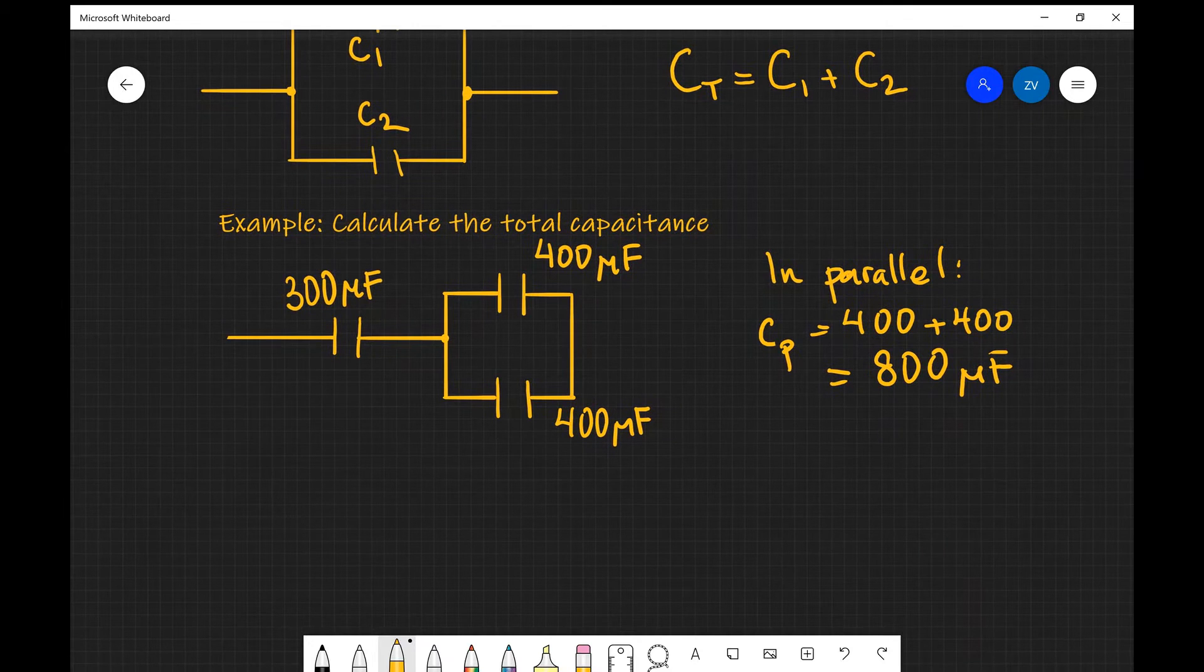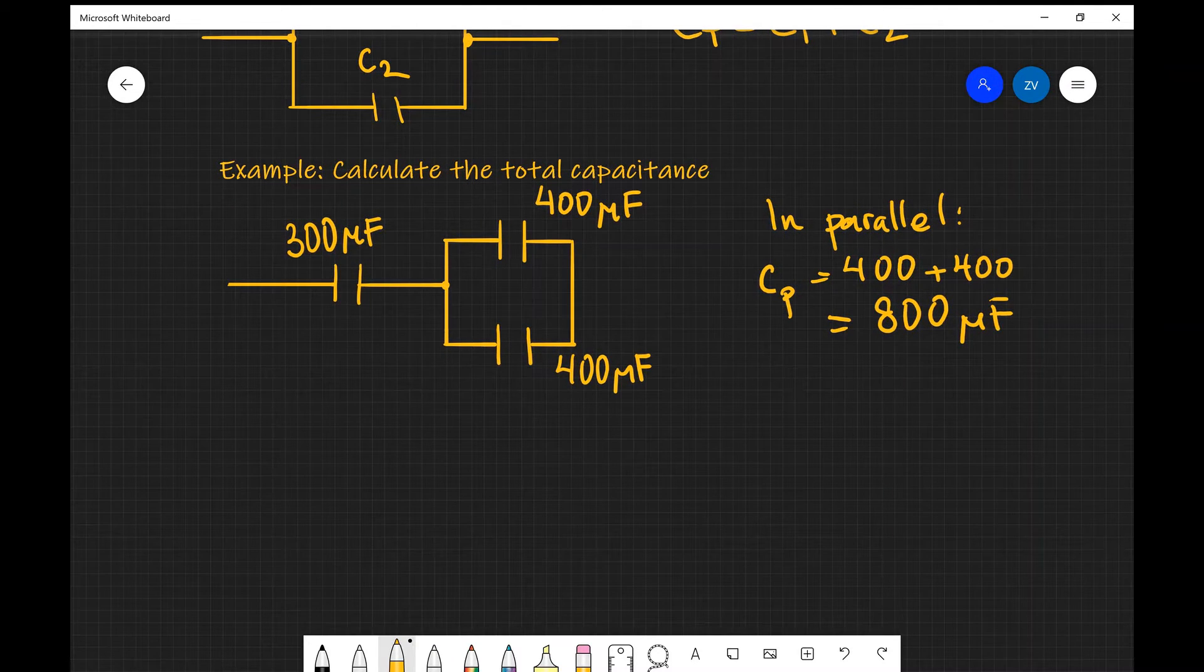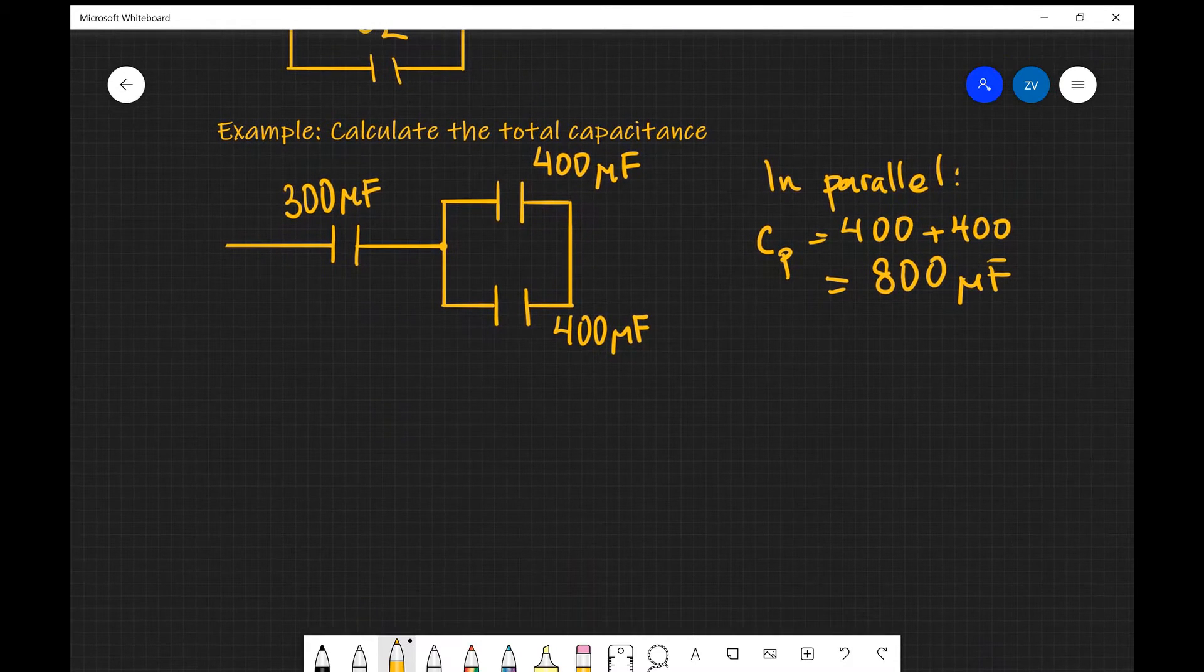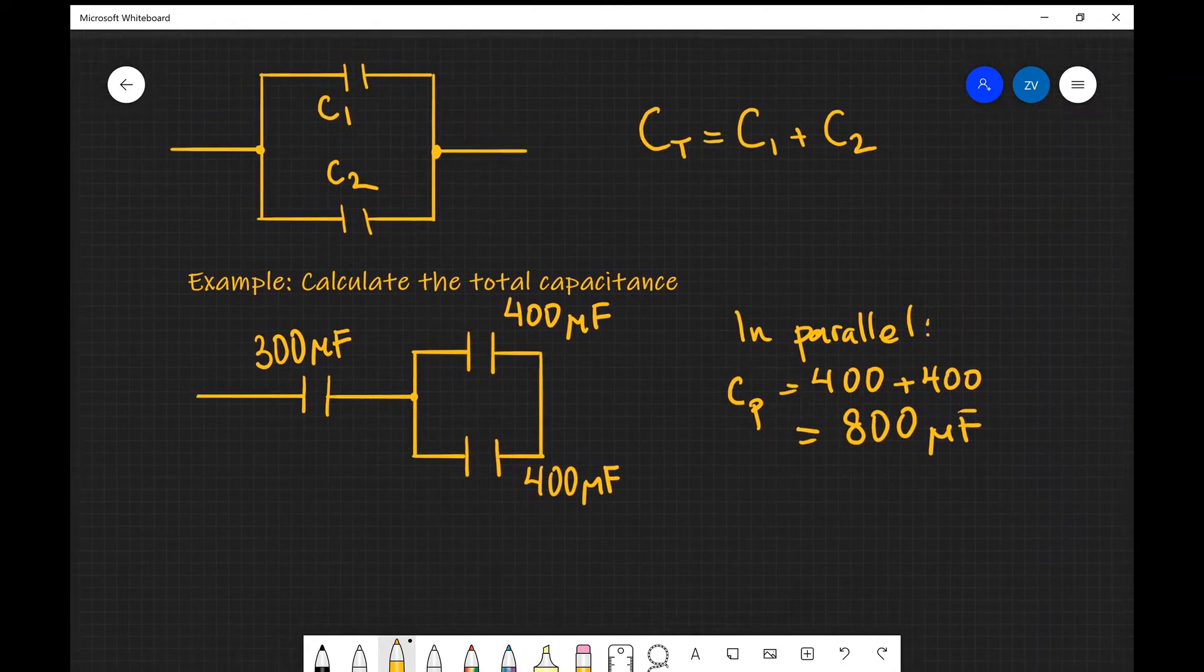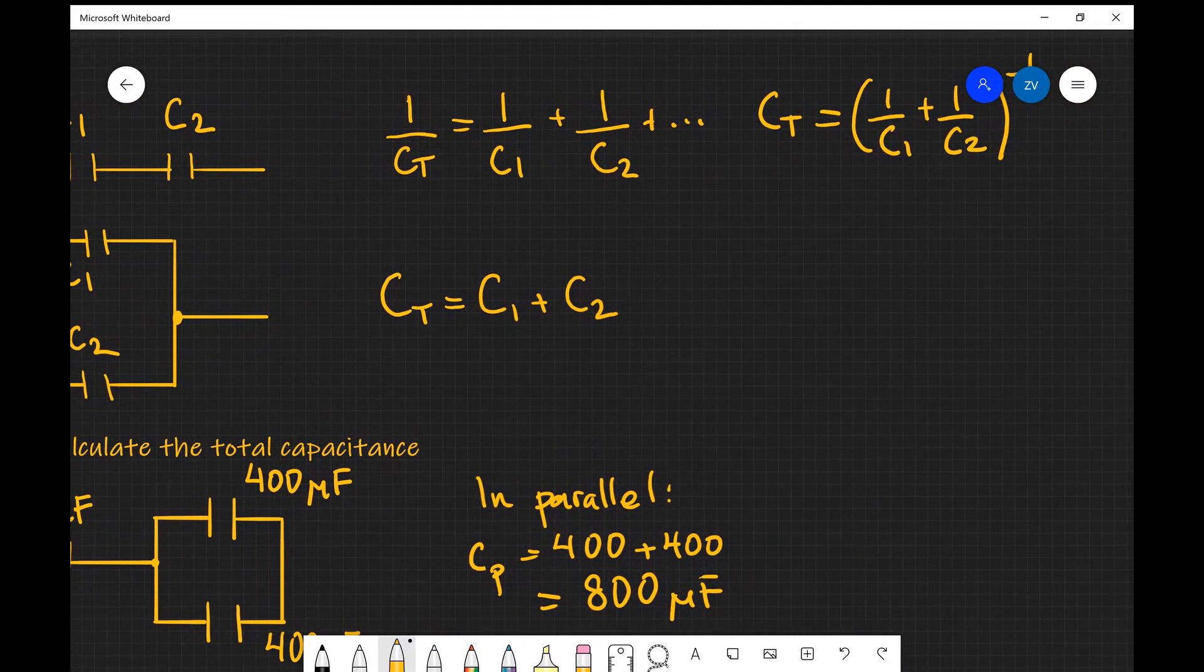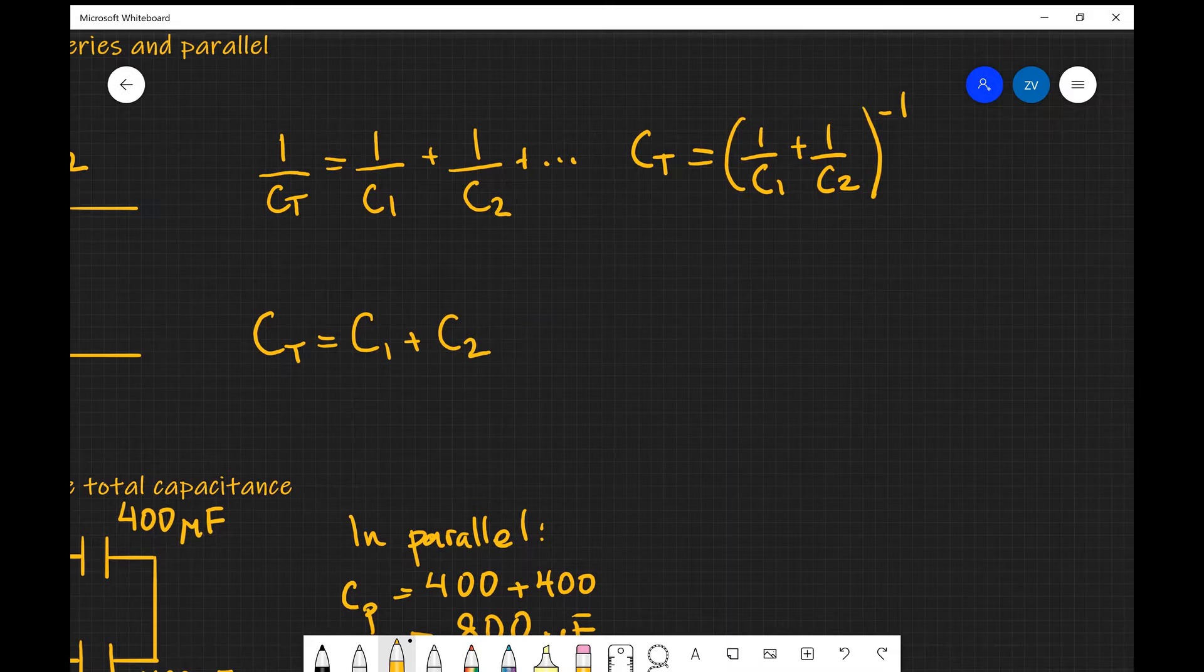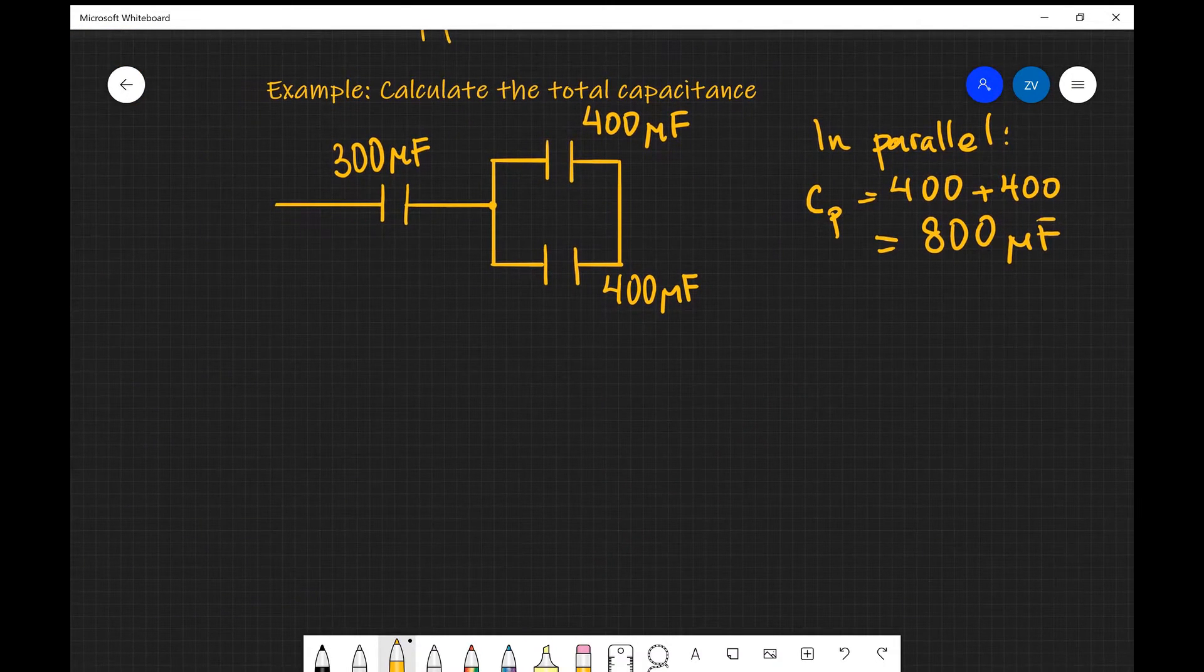Now in order to calculate the equivalent capacitance with the one connected in series, I just need to use the formula that we've mentioned above, that the total capacitance is 1 over C1 plus 1 over C2 raised to the power of minus 1. So let's just do that.